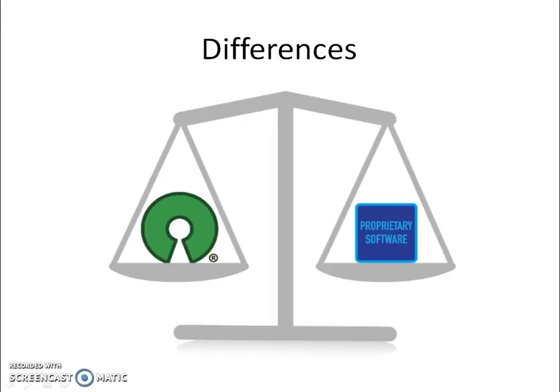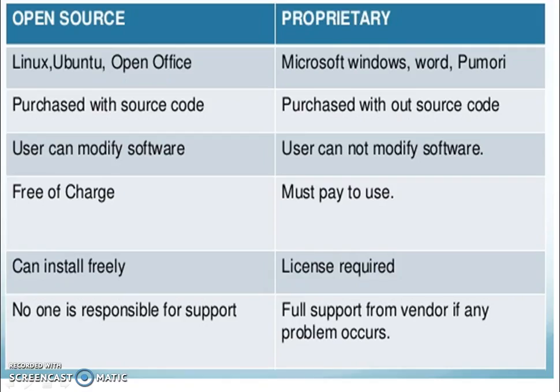Now we will see some differences between open source software and proprietary software. Open source software is purchased with the source code, whereas proprietary software is purchased without the source code. Users can modify the software in open source, whereas in proprietary software users cannot modify it. Open source software is available free of cost, but proprietary software requires payment. Open source software can be installed freely, but proprietary software requires a license. No one is responsible for giving support in open source software, but when you buy proprietary software, if any problem occurs you get extensive support from the vendor.